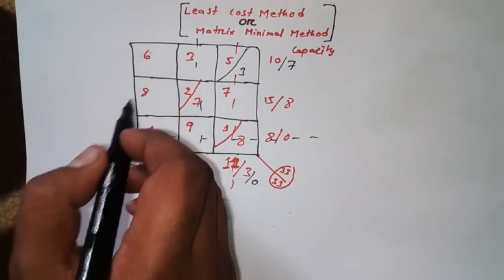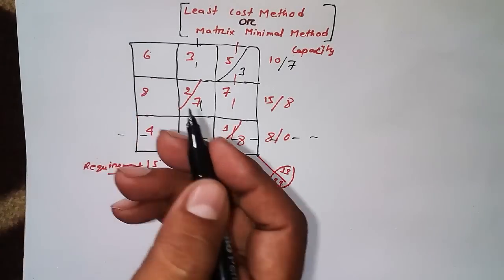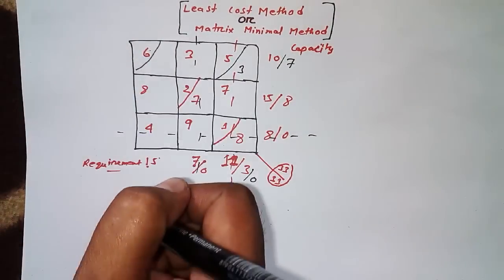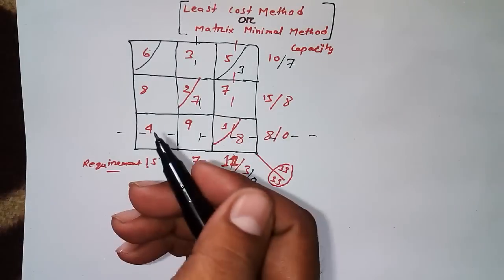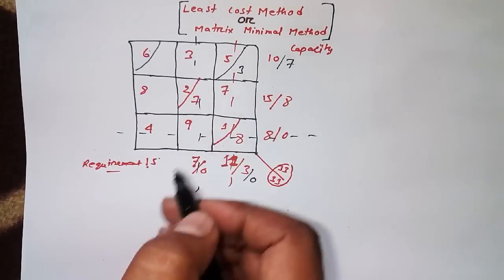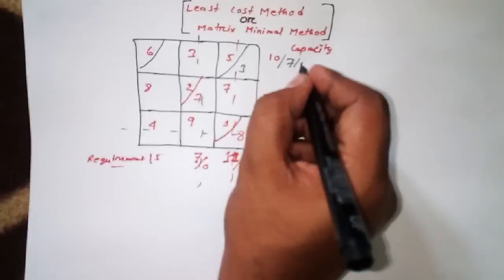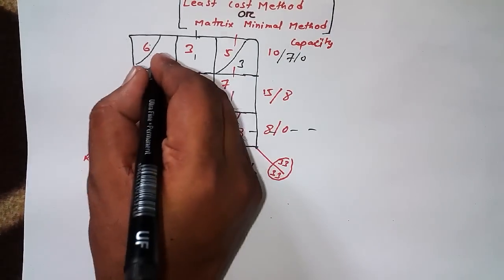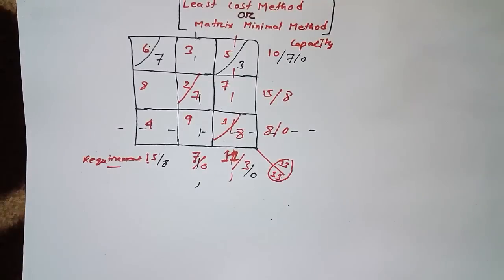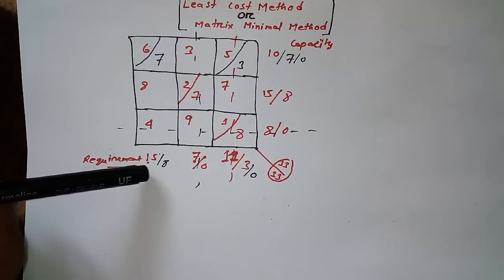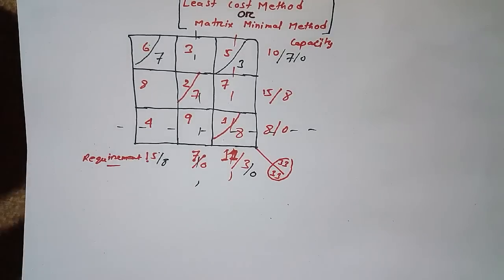I can fulfill only 7, so it becomes 0 here and 7 here. How did I get 8? Because 15 minus 7 equals 8.